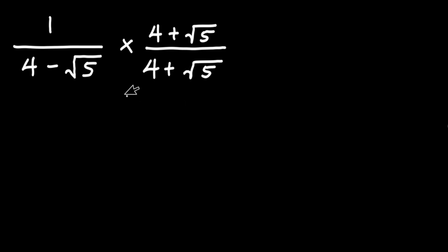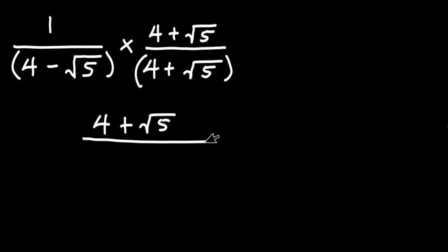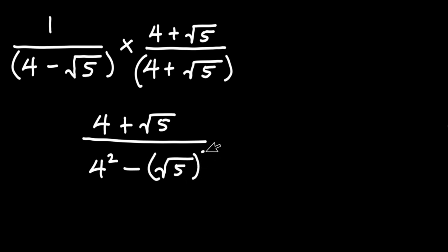You notice that as soon as we multiply these together we have what is known as difference of two squares. So 1 times the numerator gives us 4 plus square root of 5, all divided by the difference of two squares, which can be written as 4 to the 2nd power minus square root of 5 to the 2nd power.